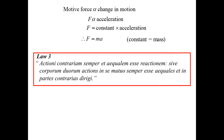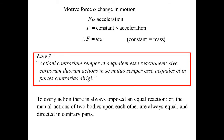The third one — actione contrarium — is most often paraphrased as 'to every action there is an equal and opposite reaction.' What it actually says is: to every action there is always opposed an equal reaction, or the mutual action of two bodies upon each other are always equal and directed in contrary parts. That's the one that explains why I'm not falling through the ground right now — the force due to gravity is acting on me, but there is an equal force from the floor acting upward, so it balances out.